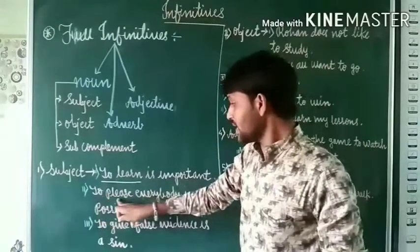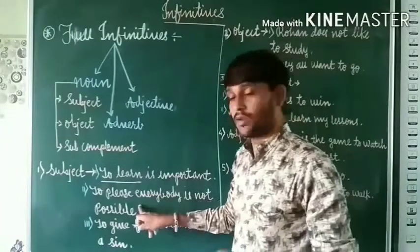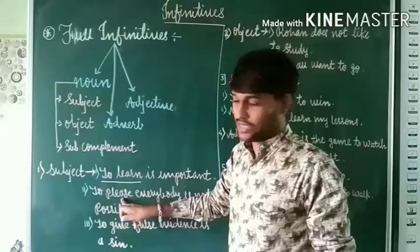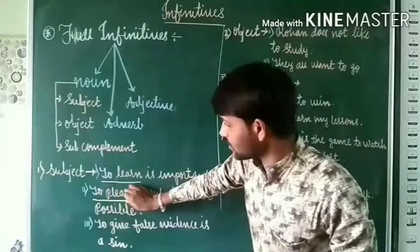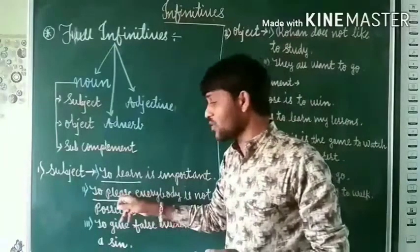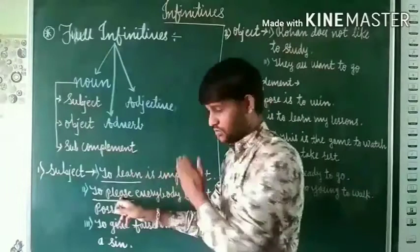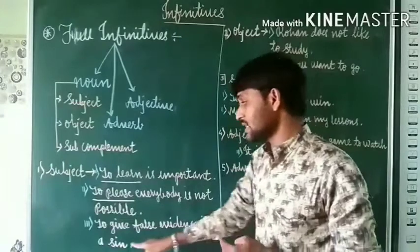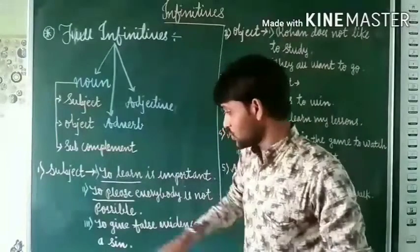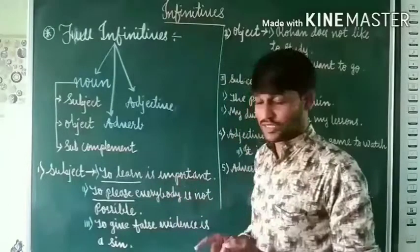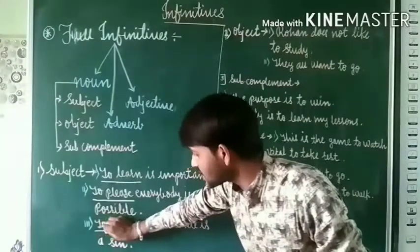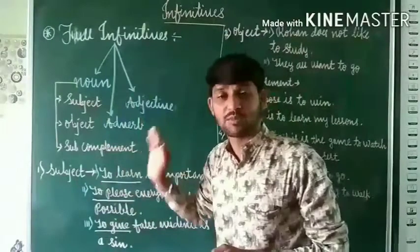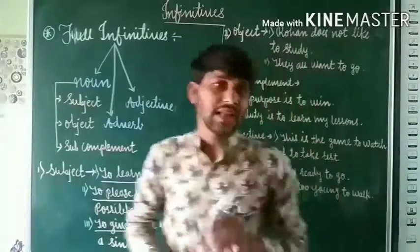Third example: 'To give false evidence, it is a sin.' What is a sin? To give false evidence. So 'to give' is used as the subject of this sentence. That is a noun functioning as a subject in the sentence.